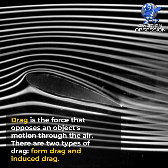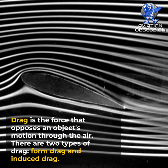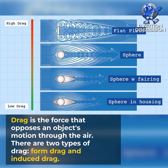Drag is the force that opposes an object's motion through the air. There are two types of drag: form drag and induced drag.